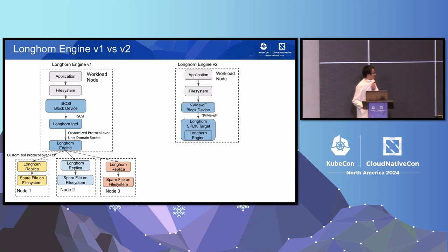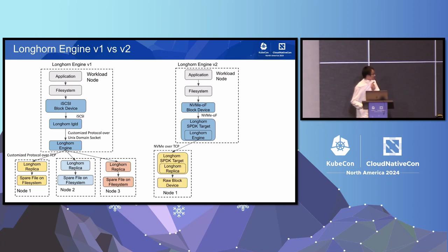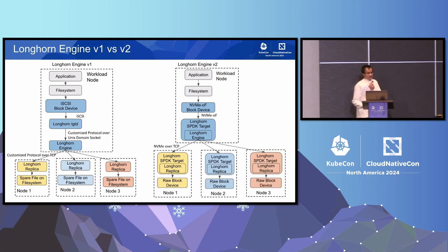For the V2 data engine, it is based on SPDK — the Storage Performance Development Kit created by Intel. When an application writes I/O, it goes through the file system layer, then to a block device created by the NVMe initiator. The I/O is forwarded to the Longhorn engine via NVMe-over-Fabrics protocol. The Longhorn engine forwards I/O to the V2 replicas, where each replica contains an SPDK bdev exposed by an SPDK target. The engine acts as a RAID-1 controller, forwarding I/O to multiple replicas simultaneously.